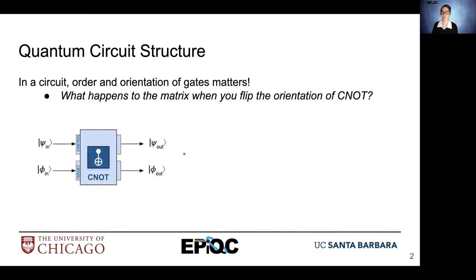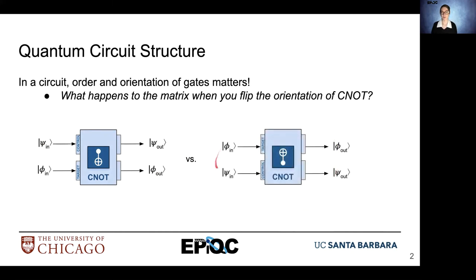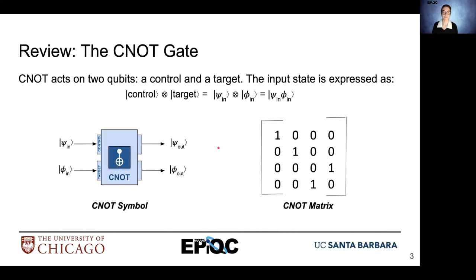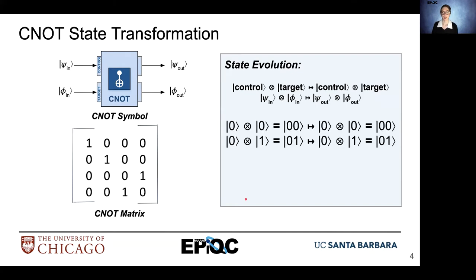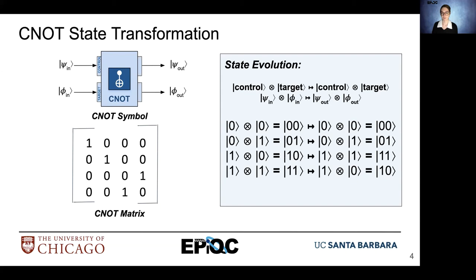We have our normal orientation for our CNOT that we're quite familiar with, and the inverted orientation where we exchange the target and control. We have our CNOT symbol and the corresponding matrix. Examining the inputs and outputs, we can see that we only have a change in the target's value when the control equals 1. So in the bottom two entries of our state evolution table, the NOT operation toggles the target when the control has a value of 1.